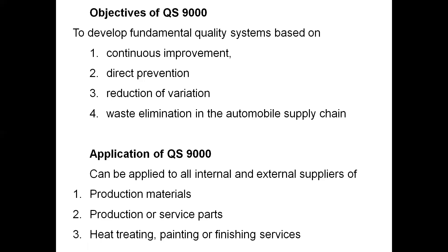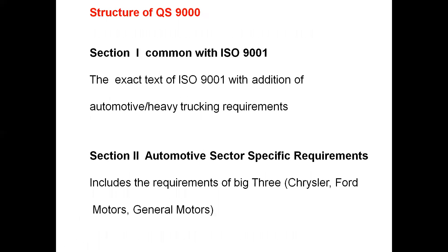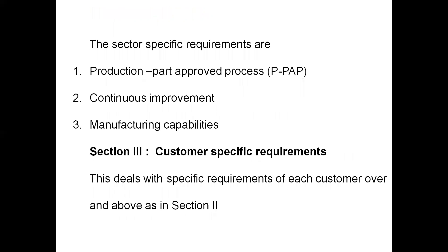Applications include heat treatment, painting, and finishing. The structure of QS 9000 has three sections. Section 1 is common requirements covering automotive plus heavy trucking equipment. Section 2 is automotive sector-specific requirements for three companies - Chrysler, Ford, and General Motors - covering production part approval process (PPAP), continuous improvement, and manufacturing capabilities. Section 3 is the customer-specific requirements.